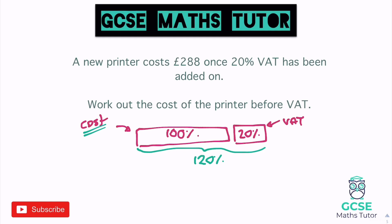A new printer costs £288 once the VAT has been added on. You just have to ask yourself: is that the VAT added on, or is that the price I'm going to have to pay including VAT? It says a new printer costs £288 — that is the full price, so that is the 120%. Writing that down: 120% equals £288. Now I need to divide down to 10%. What do I divide 120 by to get 10? That's 12. So I'm going to divide by 12.